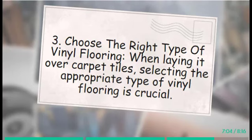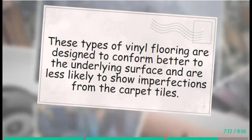Tip 3: Choose the right type of vinyl flooring. When laying it over carpet tiles, selecting the appropriate type of vinyl flooring is crucial. Opt for a thinner, more flexible vinyl product, such as Luxury Vinyl Planks (LVP) or Luxury Vinyl Tiles (LVT). These types of vinyl flooring are designed to conform better to the underlying surface and are less likely to show imperfections from the carpet tiles.